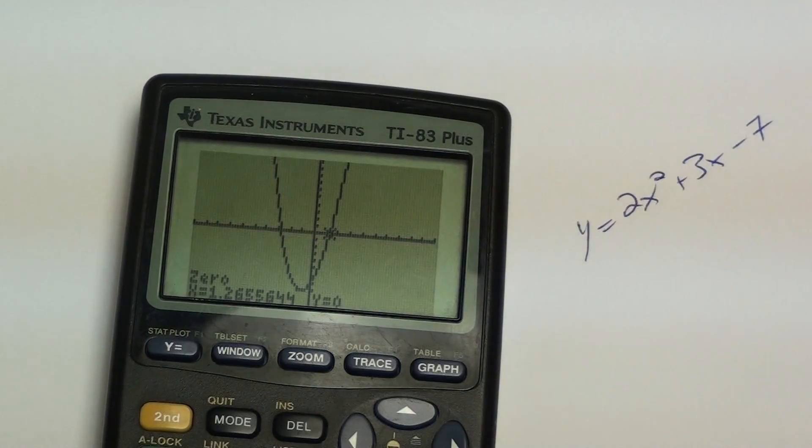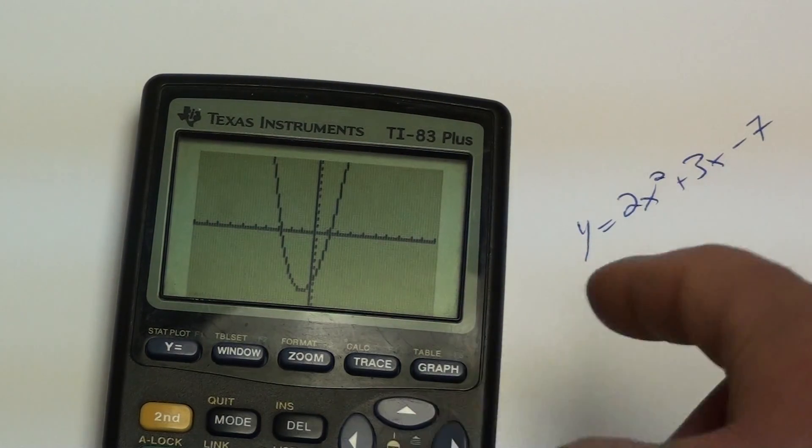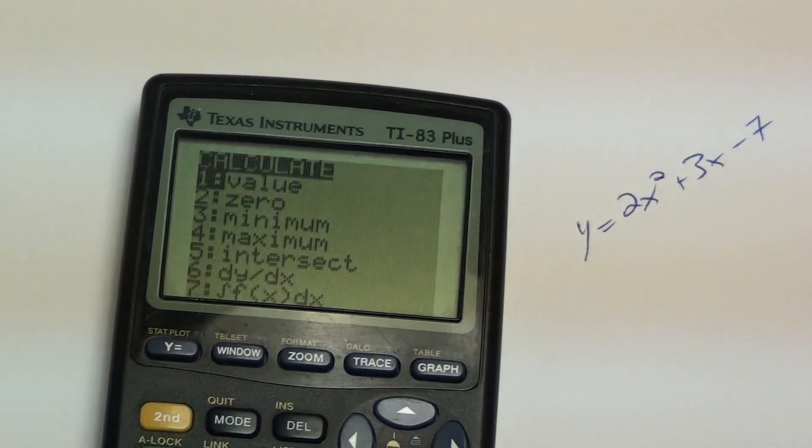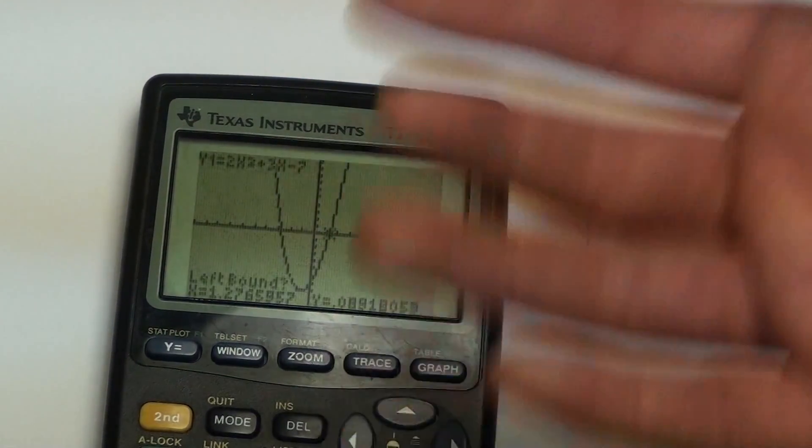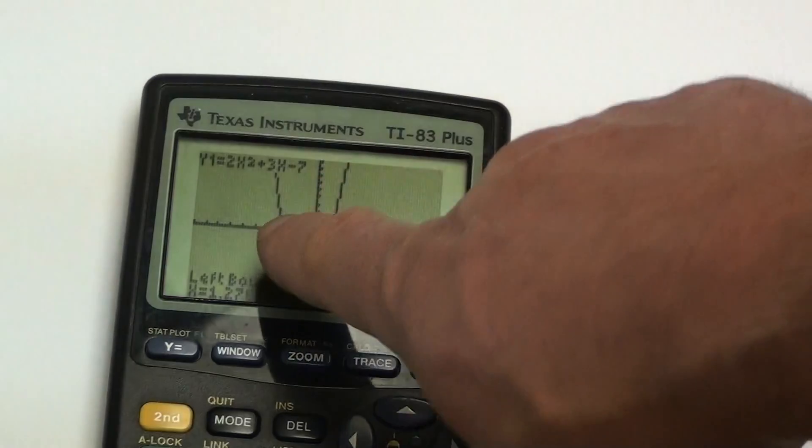If there's another x-intercept, you need to do the same thing. So I'm going to clear. I'm going to go second, calc, zero. Same steps again. But now I want to find this x-intercept.